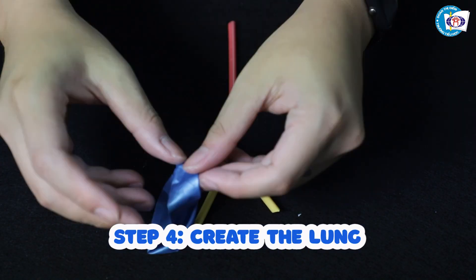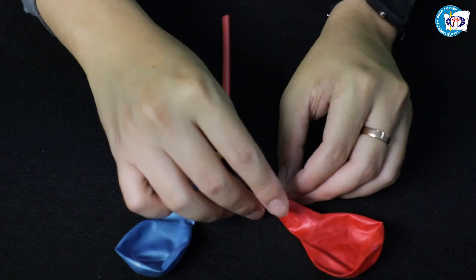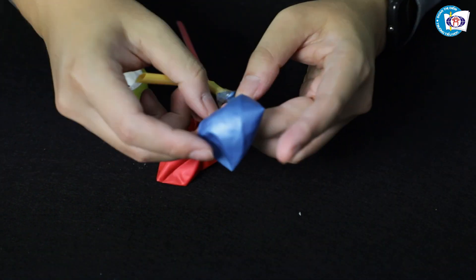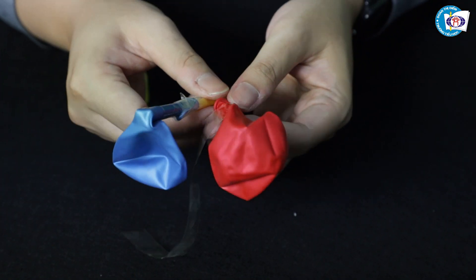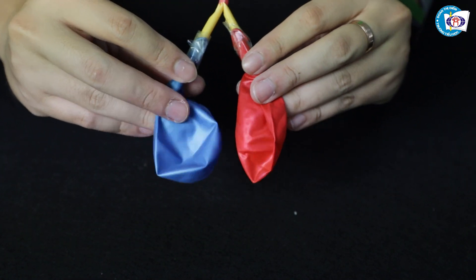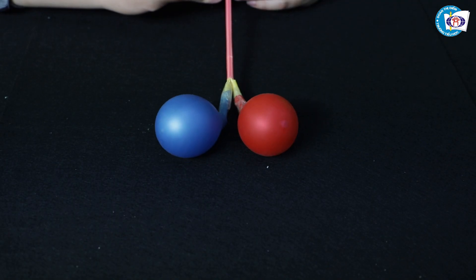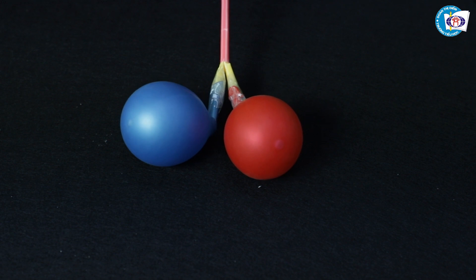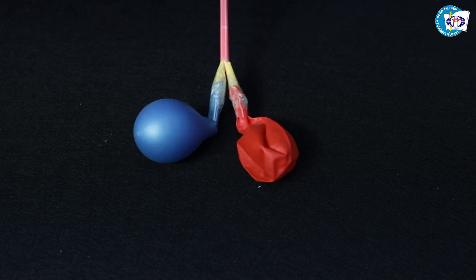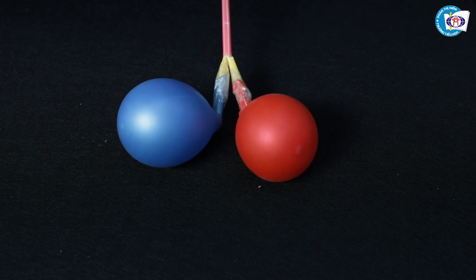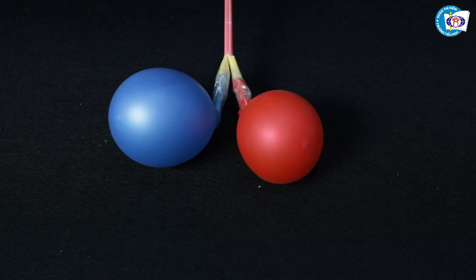Step 4: Make the lungs with 2 balloons. Tape 2 balloons into the 2 openings of the windpipe. Make sure no air gets out. After taping the lungs into the windpipe, try breathing through the long straw to see if the balloons can get bigger and smaller evenly.